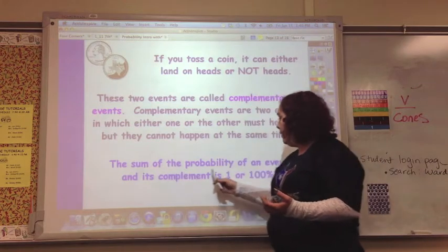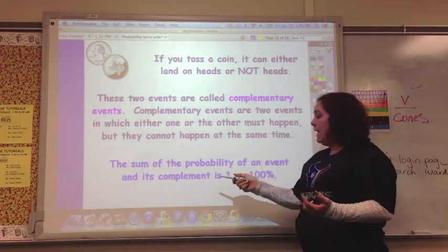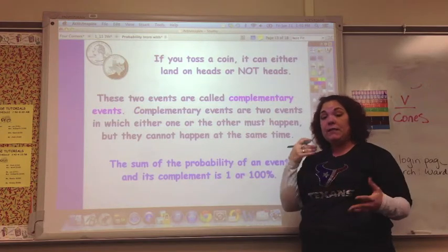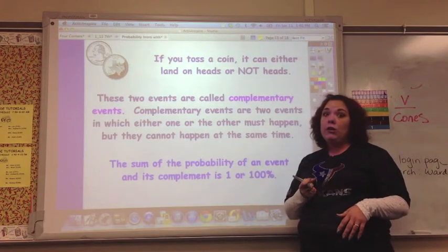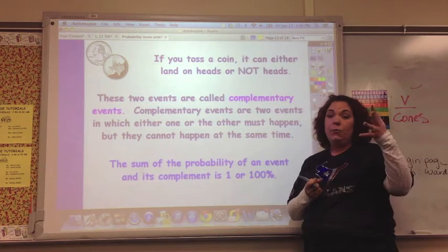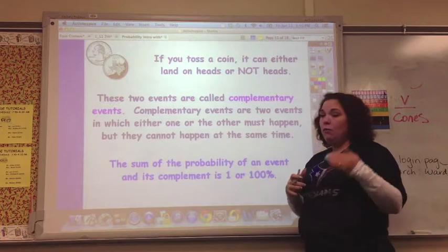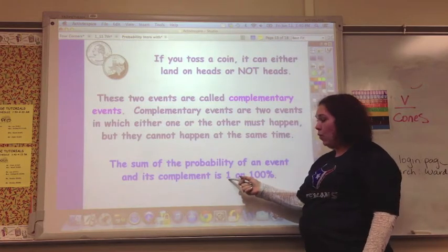So the sum of the probability of an event and its complement is 1 or 100%. That 50% plus 50%. Or you can look at it as heads is 1 out of 2, and tails is 1 out of 2, and 1 half plus 1 half equals 1.